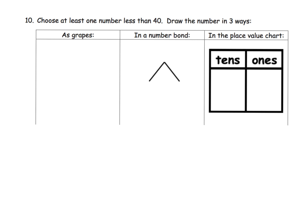And lastly, choose at least one number less than 40. Okay, so let's do 27. And how would we show 27 in a number bond? Well, we would put 27 here.